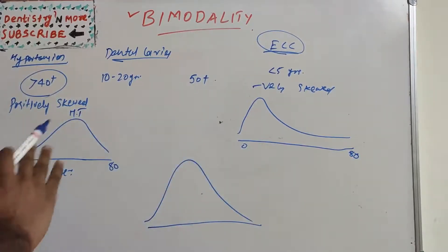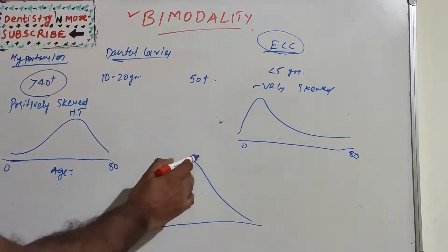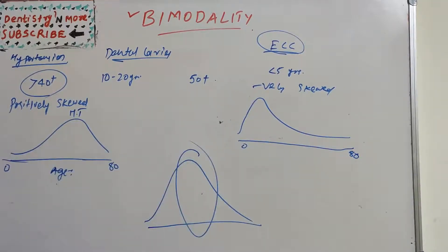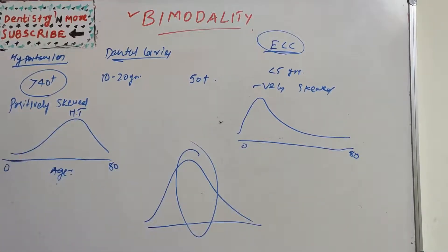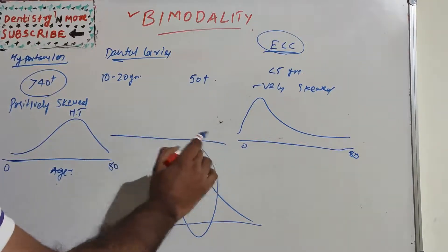Equally distributed on the left and right side and most data will be at the center. If it is deviated to the right side, it is known as positively skewed, and if it is towards the left side, it is known as negatively skewed.